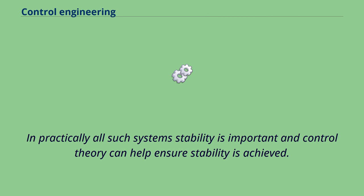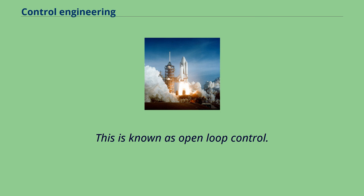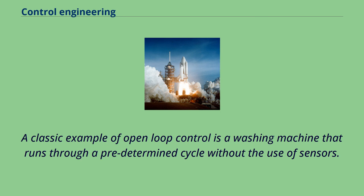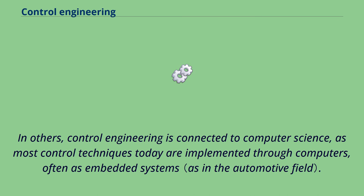In practically all such systems, stability is important and control theory can help ensure stability is achieved. Although feedback is an important aspect of control engineering, control engineers may also work on the control of systems without feedback. This is known as open-loop control. A classic example of open-loop control is a washing machine that runs through a predetermined cycle without the use of sensors. At many universities around the world, control engineering courses are taught primarily in electrical engineering and mechanical engineering, but some courses can be instructed in mechatronics engineering and aerospace engineering. In others, control engineering is connected to computer science, as most control techniques today are implemented through computers, often as embedded systems.